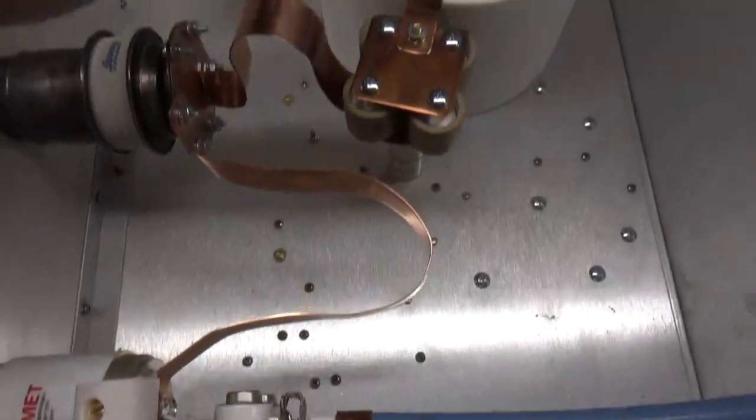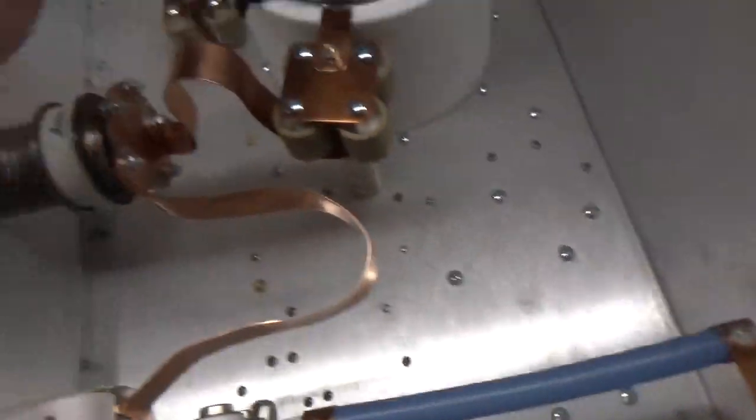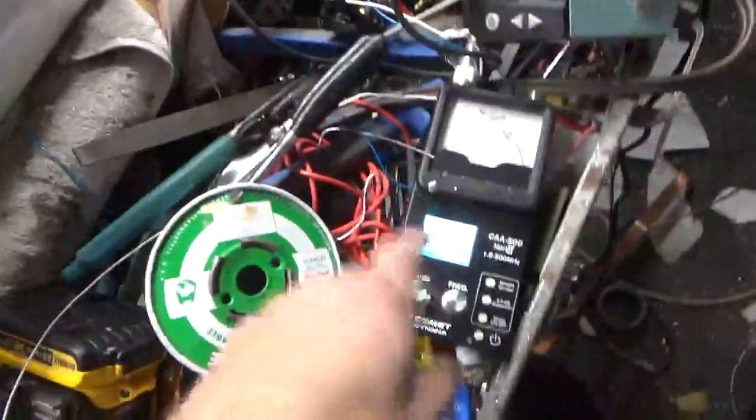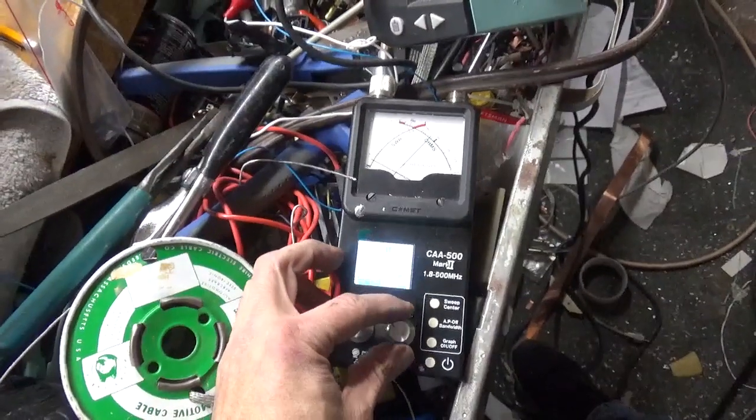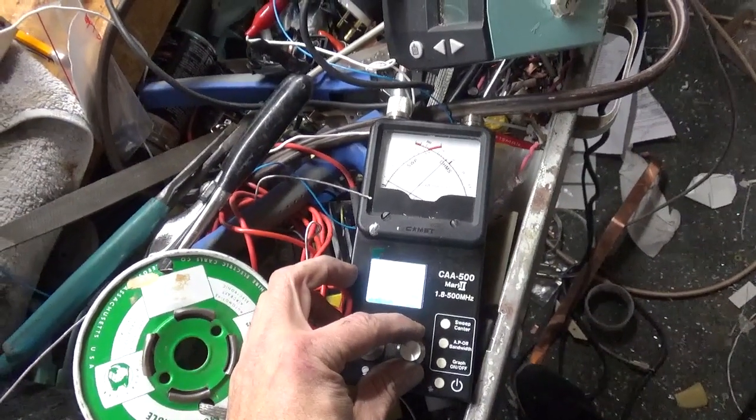So, you can see everything. I'm going to show you something. Right now, I'm back feeding it with my analyzer. It's a bunch of tools here. So, at 50 megs, it actually covers the entire 6 meter band.